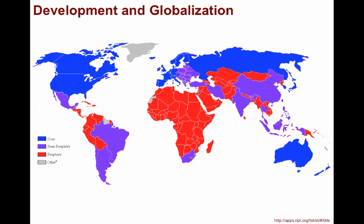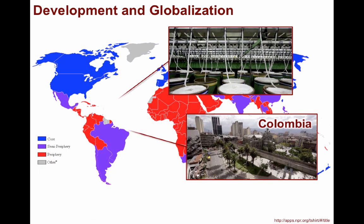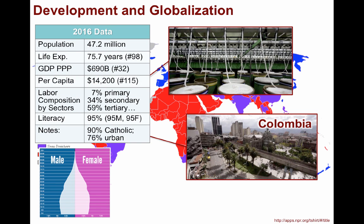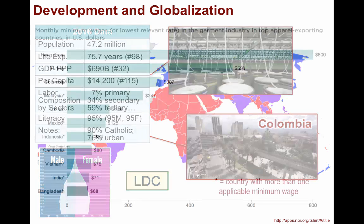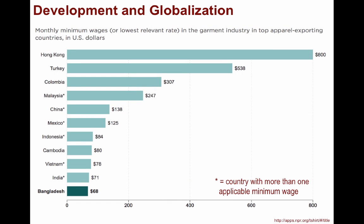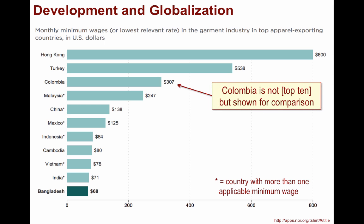Colombia is the other country, primarily because of its proximity to the U.S. and its relatively low labor cost. Looking at the country data for Colombia along with its population pyramid, you can see its per capita income ranking in the bottom half of the world. And even though it is better in terms of health, wealth, education, and urbanization, it still ranks as an LDC. This chart compares minimum wages across the top 10 garment exporting countries in 2013. Even though Colombia isn't actually in the top 10, it is included for this particular example.